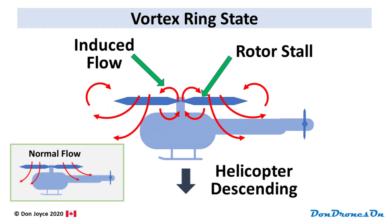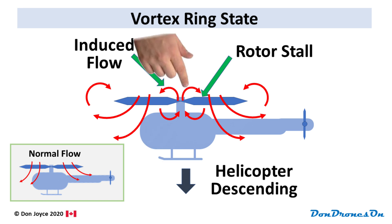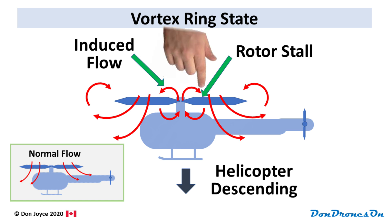In the center of the rotor, where there's no blade, air rushes upwards and causes a cascade of vortexes on the blades, starting at the hub. These vortexes cause the blades to stall and provide no lift.